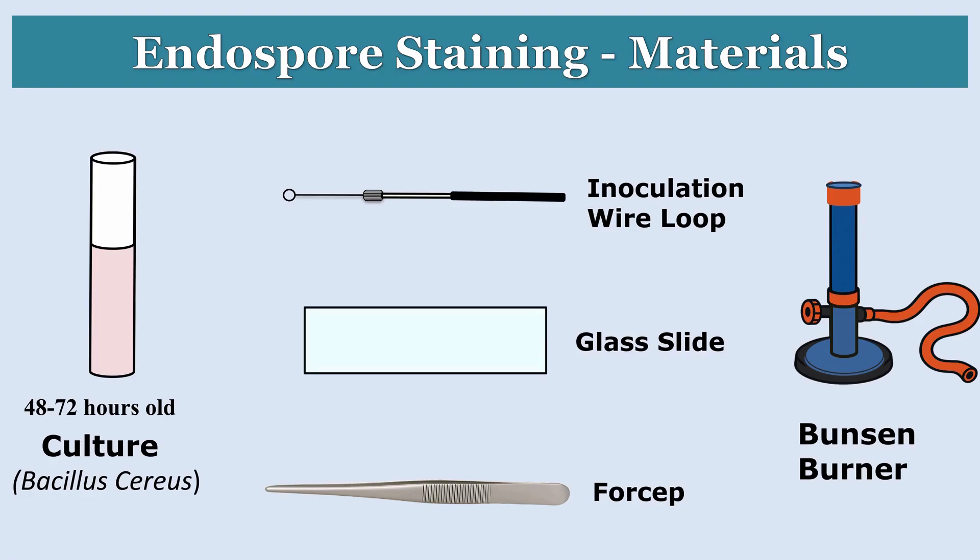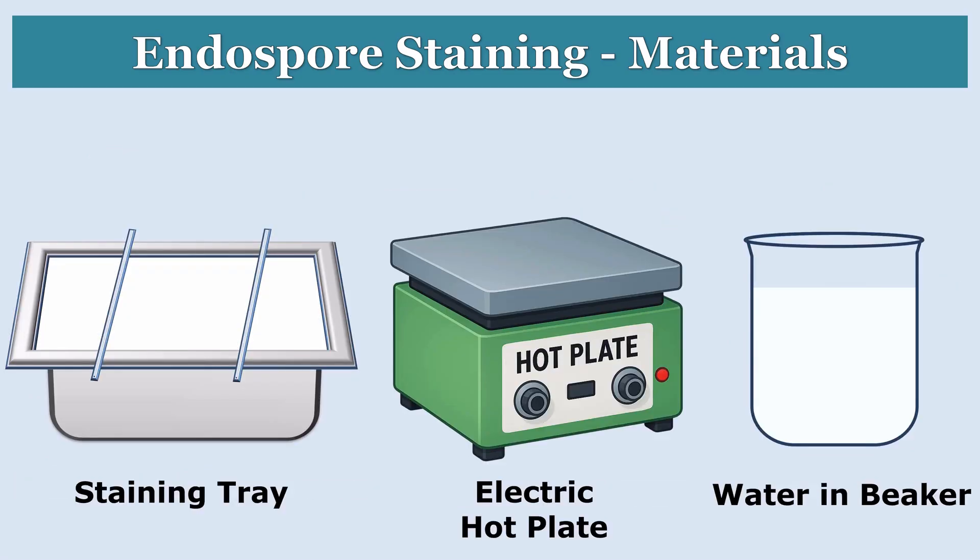Then we need equipment: a sterile wire loop, a clean grease-free glass slide, forceps, a Bunsen burner, a staining tray, an electric hot plate, and a beaker containing water.